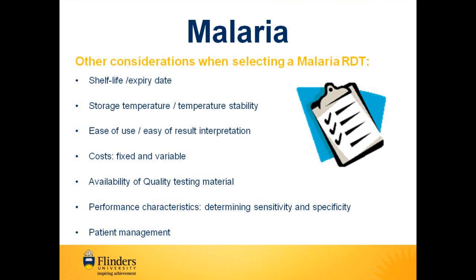When selecting a malaria RDT, other things that need to be considered are the shelf life or expiry date, which should ideally be 18 months or more. The storage temperature and temperature stability, which should ideally be up to 40 degrees Celsius, to ensure safe transport of RDTs is possible. The ease of use and interpretation of results, and also the cost of the RDT, its delivery and any other materials or consumables needed to conduct testing should be considered. Although some RDTs may be cheaper than others, they may require additional equipment such as lancets or capillaries that will increase the cost per test. Some manufacturers will have their own quality testing materials available to support field testing, but if they do not supply quality testing material, then it will have to be sourced elsewhere and trialled for its compatibility with the RDT.